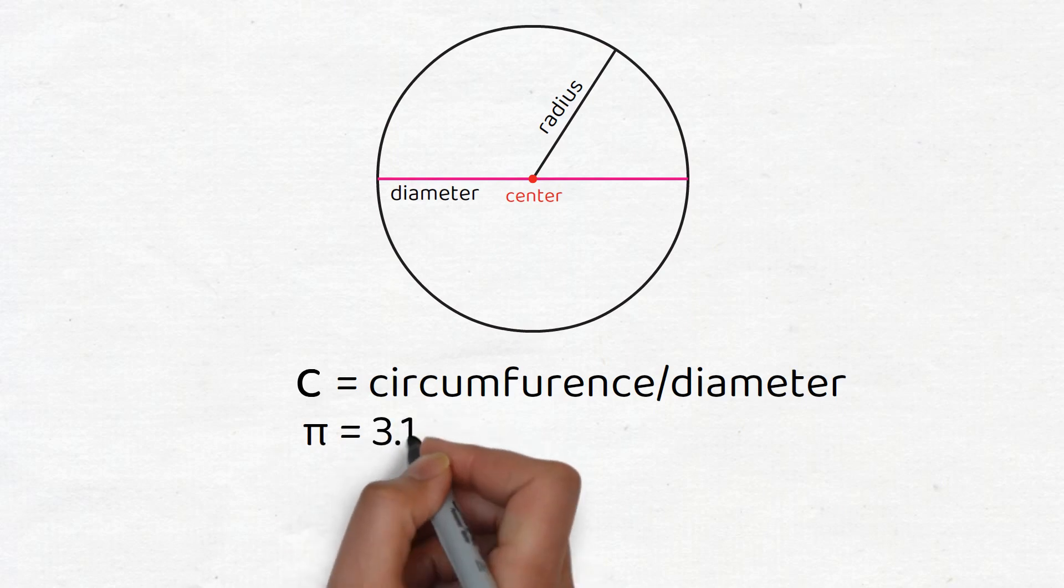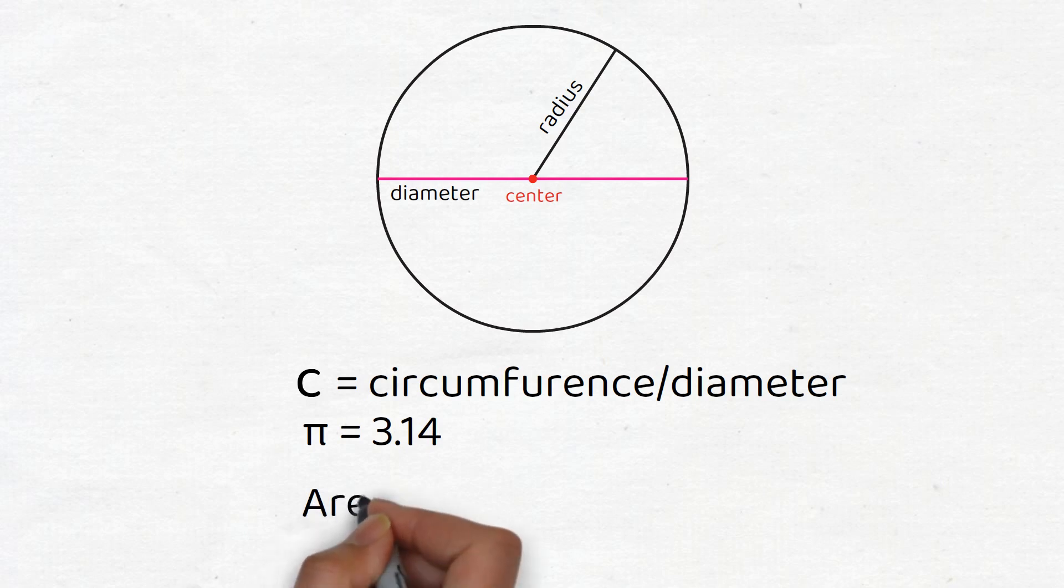The circumference divided by the diameter is always the same, and that is a constant number called pi, which is approximately 3.14. So a circle has a radius which is one half of its diameter, and the area of a circle is pi r squared, or pi times the radius squared.